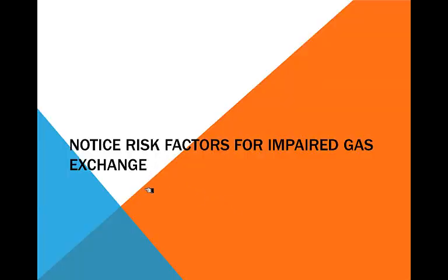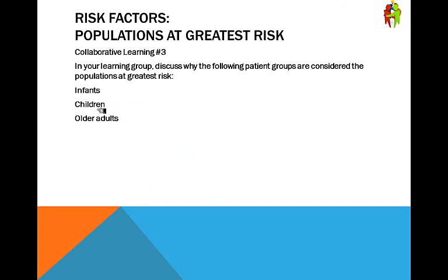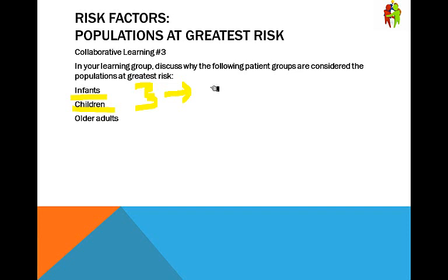Risk factors for impaired gas exchange: in infants and children, they have an airway that is smaller and more elastic — it's more prone to collapse. Their tongue is larger in proportion to adults. Infants two to four months are obligate nose breathers, so they can't breathe out of their mouth at all. If they have a stuffy nose, that becomes a big issue for them. They also have weaker abdominal muscles.